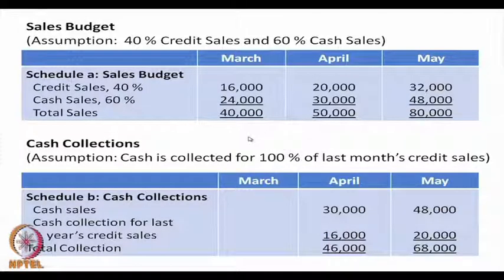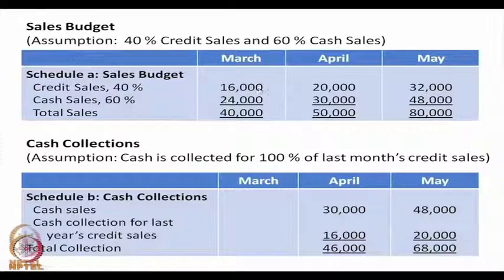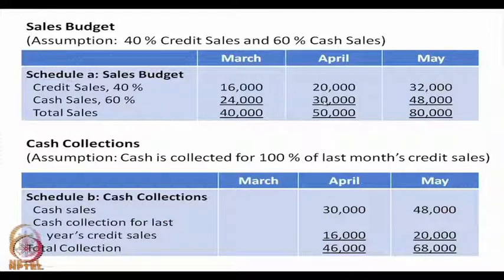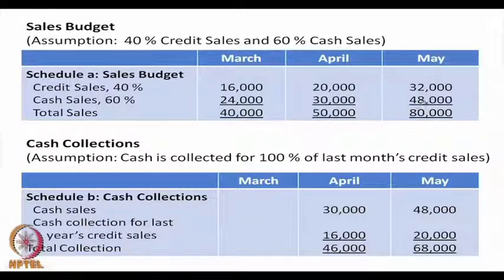First, the sales budget. 40% of total sales will be on credit and 60% will be in cash. March sales were Rs. 40,000, so credit sales were Rs. 16,000 and cash sales Rs. 24,000. For April, 40% of Rs. 50,000 is Rs. 20,000 credit and 60% is Rs. 30,000 cash. For May, 40% of Rs. 80,000 is Rs. 32,000 credit and 60% is Rs. 48,000 cash. This is Schedule A — the sales budget.